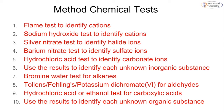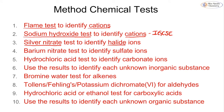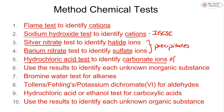For inorganic substances, we identify cations using flame tests and the sodium hydroxide test. For halide ions we use the silver nitrate test, and for sulfate ions we use the barium nitrate test — both giving precipitates. For carbonate ions we use the hydrochloric acid test, which gives effervescence. Taking all that information together, we can identify both the cation and the anion in inorganic substances.